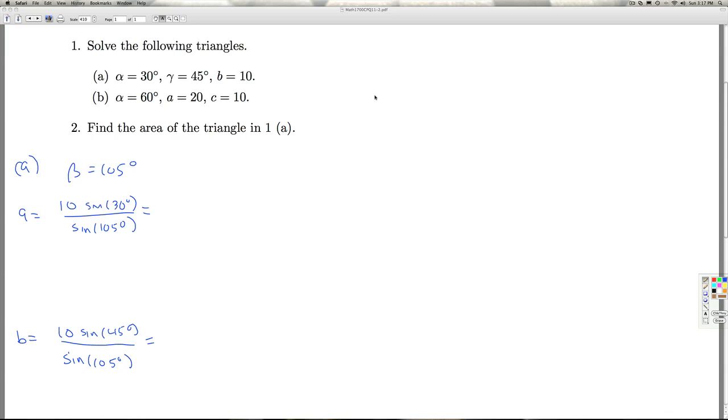Now, sine 105 we can actually figure out exactly. Because 105 is the sum of two angles we know.